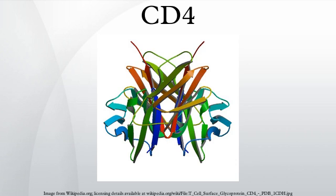In molecular biology, CD4 is a glycoprotein found on the surface of immune cells such as T helper cells, monocytes, macrophages, and dendritic cells. It was discovered in the late 1970s and was originally known as LR3 and T4 before being named CD4 in 1984. In humans, the CD4 protein is encoded by the CD4 gene.